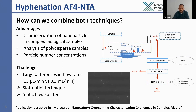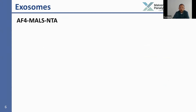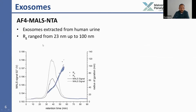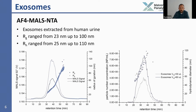This work was just accepted in Molecules. The first example I would like to show is exosomes purchased and extracted from human urine. In the fractogram, we see the MALS signal and the radius of gyration ranging roughly from 23 to 100 nanometers, showing a pretty broad size distribution. We also obtain NTA results showing particle number concentration over time and a hydrodynamic size ranging from 25 to roughly 100 nanometers.